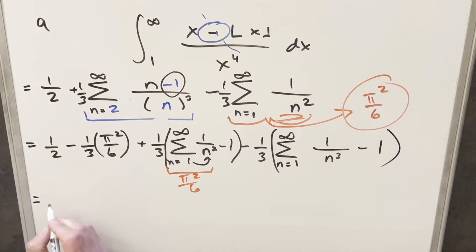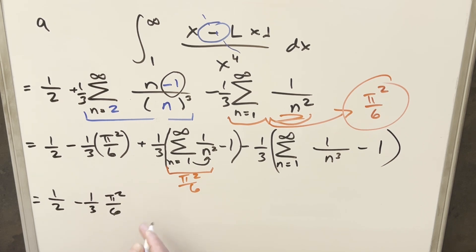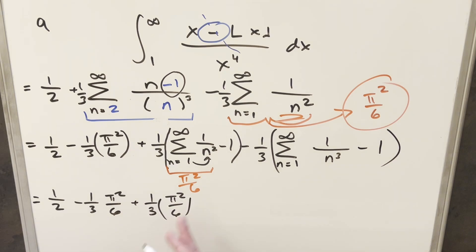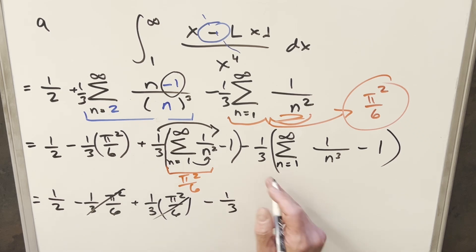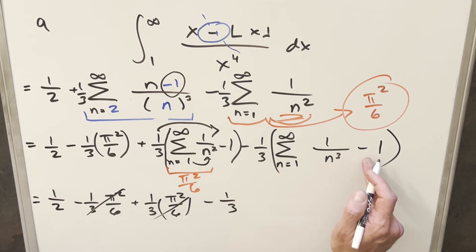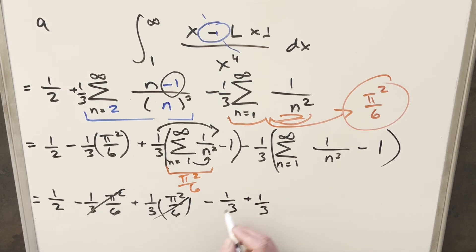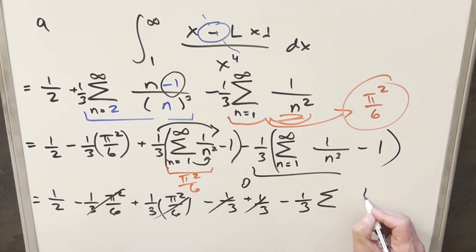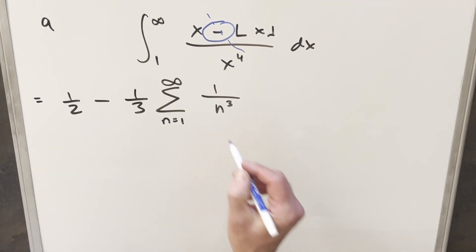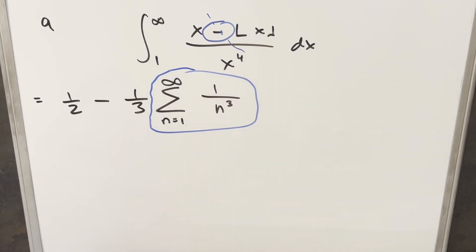Now I just need to distribute everything out. We have one half, minus one third pi squared over six, then plus one third pi squared over six — these cancel, so we don't even need to know the Basel problem value here. Distributing the one third gives minus one third, and the minus one third times minus one gives plus one third, but those cancel to zero. All we're left with is one half, minus one third, and the sum of one over n cubed.